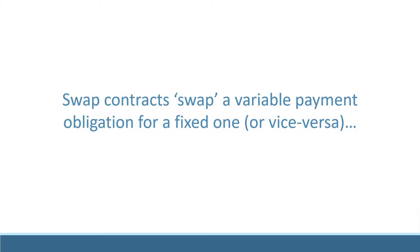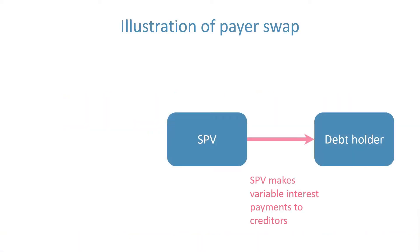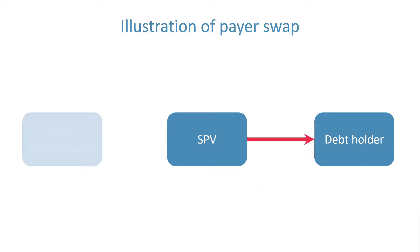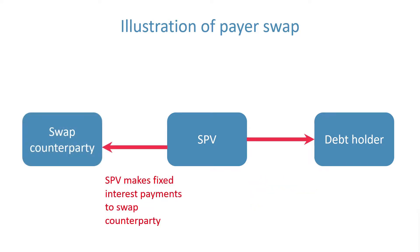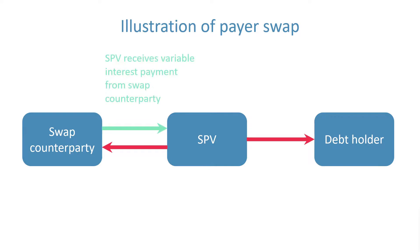Interest rate swaps are contracts which change variable payment obligations into fixed ones, or vice versa. Suppose the company takes out a payer swap. This means they agree to pay a fixed sum and receive compensation for the variable interest commitments on their original debt agreement.